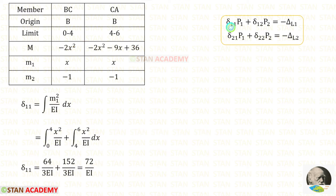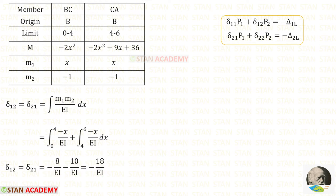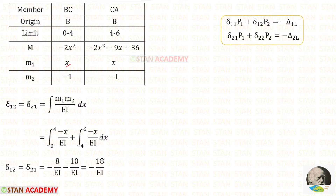Now let us find delta 11. The formula is the integration of M1 squared divided by EI dx. After applying the values of M1 we get the result. For delta 12 and delta 21, both have the same formula — the integration of M1·M2 divided by EI dx. Since X into minus 1 gives minus X, after calculation we get minus 18 divided by EI.